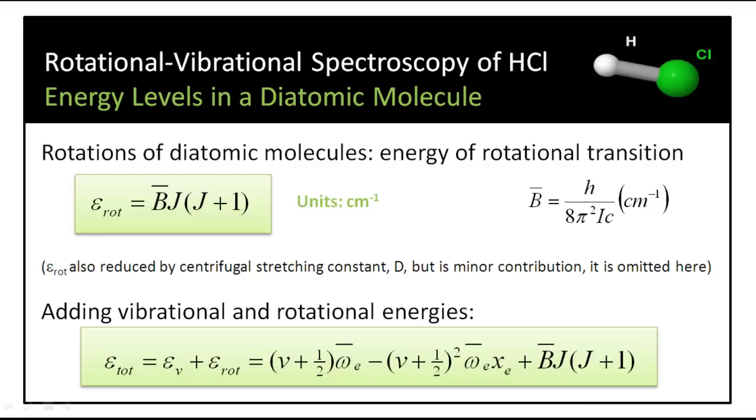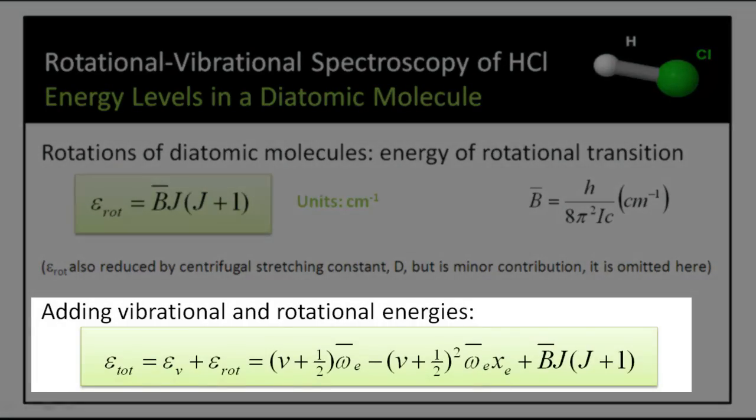In the same way that we consider the energy of the vibrational transition, we can also consider the much smaller rotational transition, that component of the total energy transition involved in the change of J of plus or minus 1. Remember that selection rule. The energy depends on the rotational constant, B bar, and it is shown here. Therefore, we can sum together the rotational and vibrational transition to give the total energy of each transition.